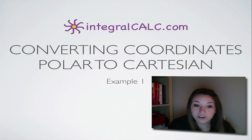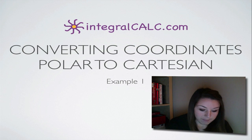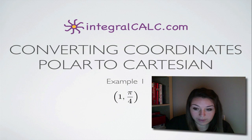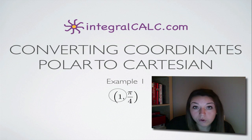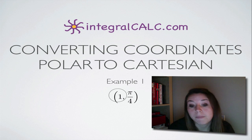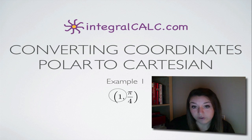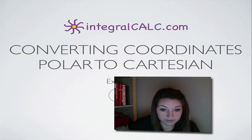Today we're going to be converting a polar point to a Cartesian point. The problem that we have is the polar point 1, pi over 4, and we're going to convert it to Cartesian coordinates.